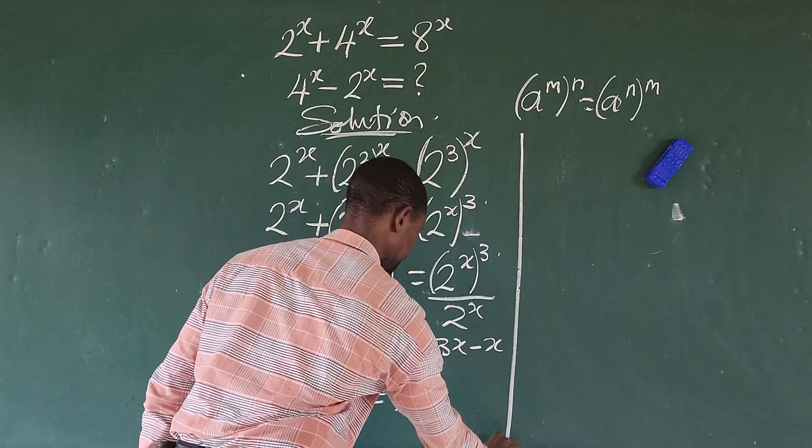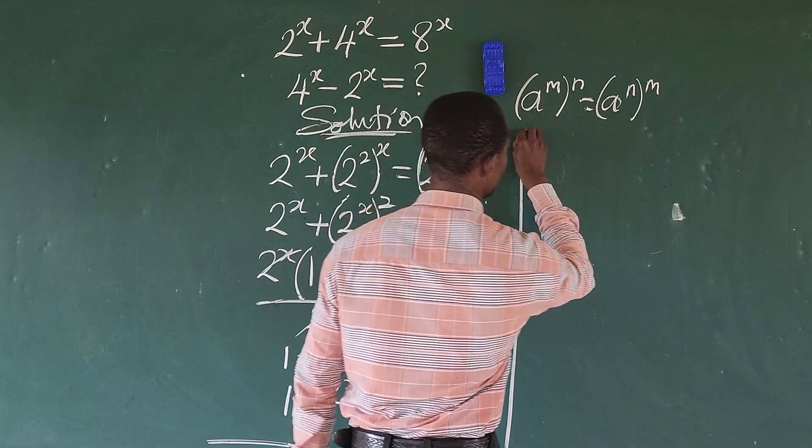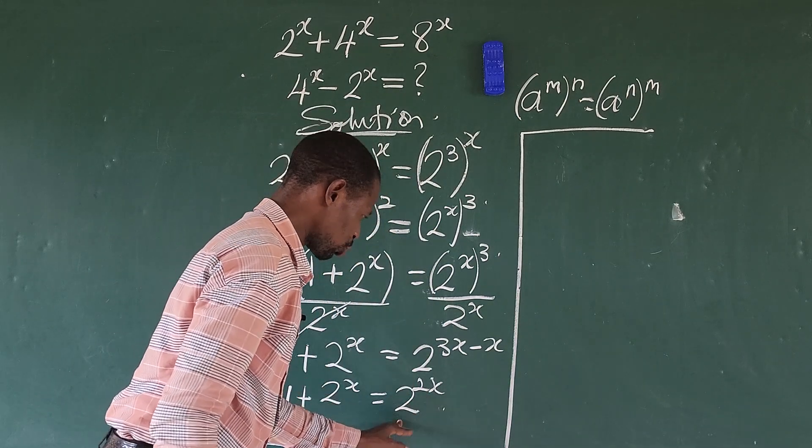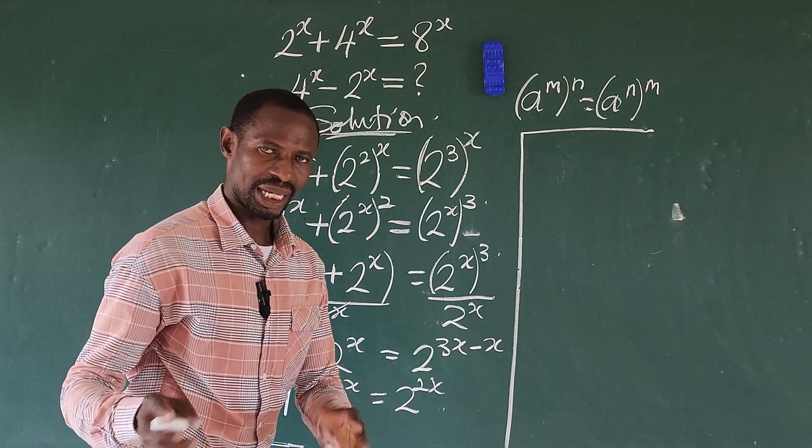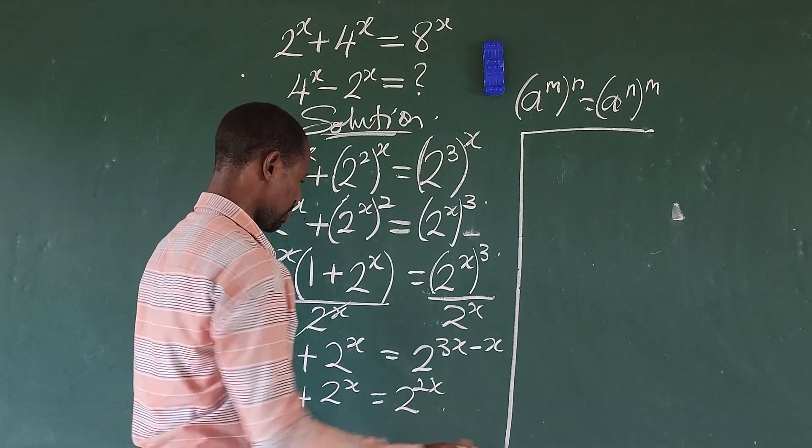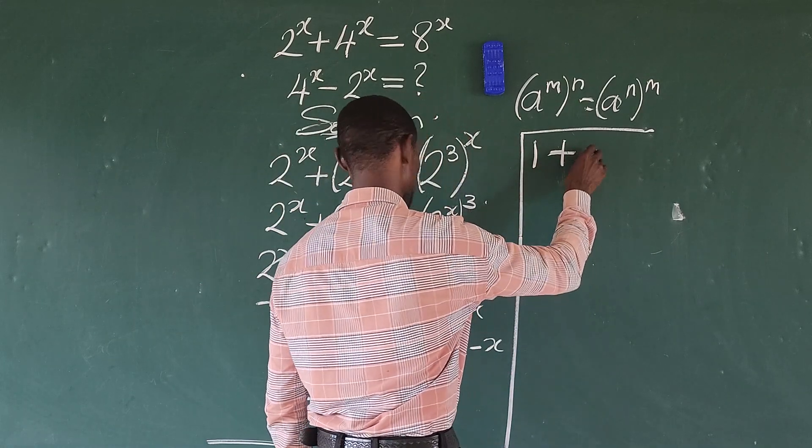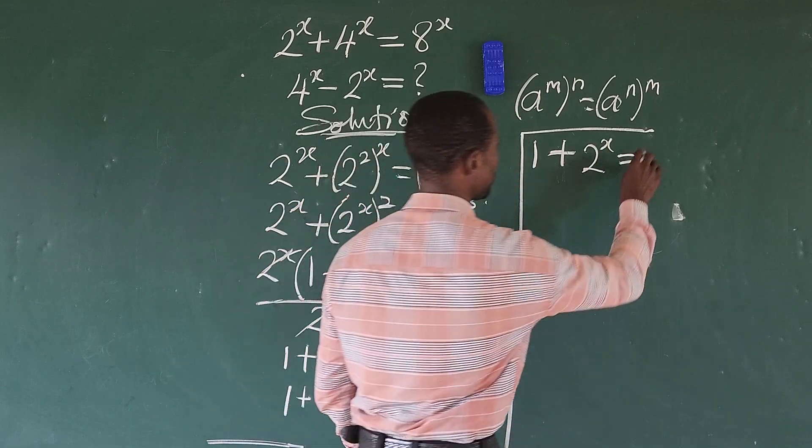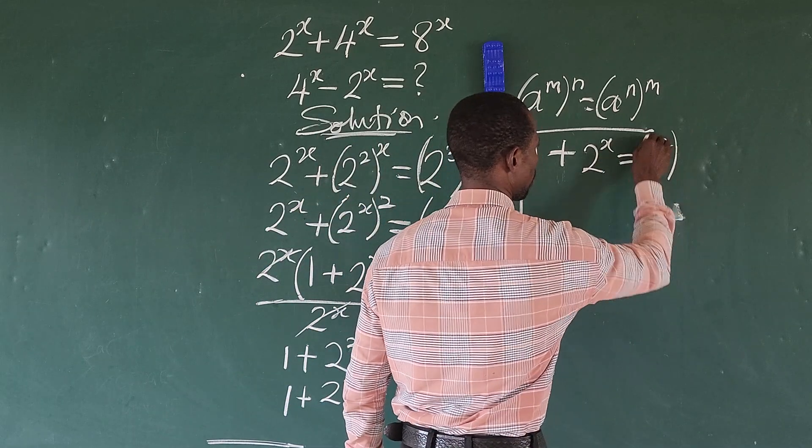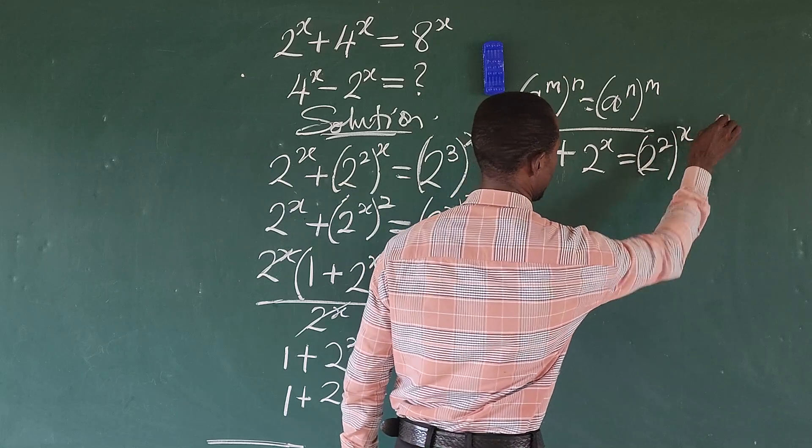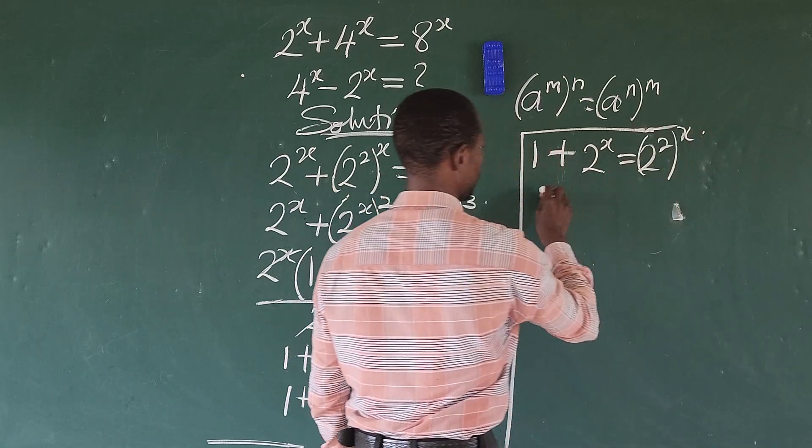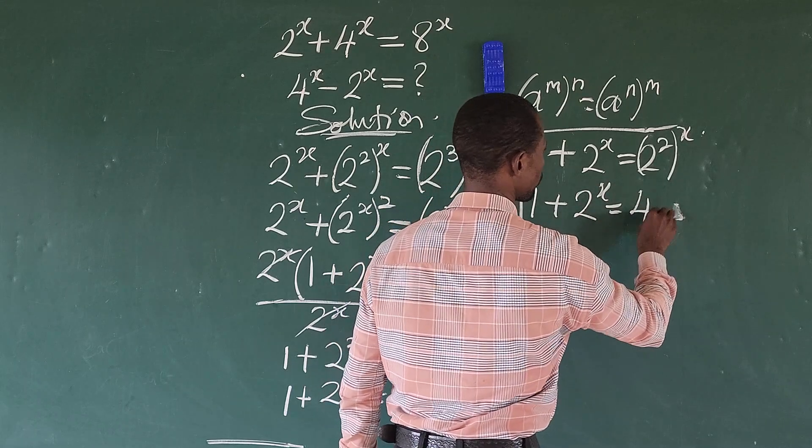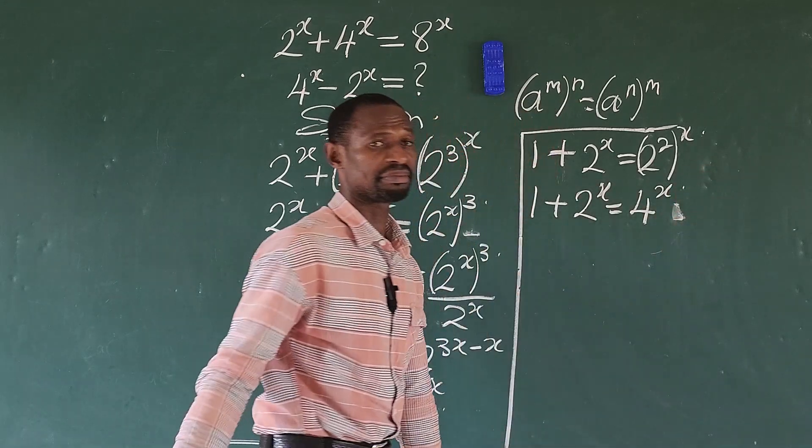So let's continue here. From what we have now, what is 2 to the power of 2? That is 4. Because this expression could be written as 1 plus 2 to the power of x equal to, 2 to the power of 2 all to the power of x. So here this will give us 1 plus 2 to the power of x equal to 4 to the power of x.